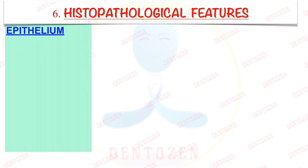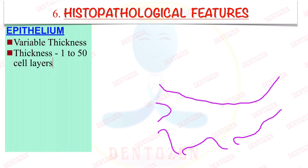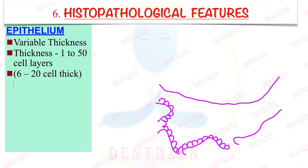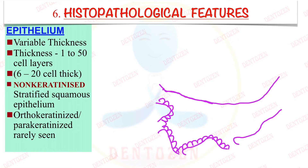Regarding histopathology, this is one cyst in which the epithelium is of variable thickness — the number of cell layers is different in different regions of the epithelium. It can vary from 1 to 50 cell layers, or they can vary from 6 to 20 cells thick. It is non-keratinized epithelium; we do not see keratin on the surface, although rarely we can see orthokeratinized or parakeratinized epithelium.